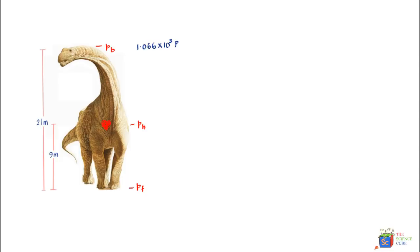The equation we'll use is that the pressure at the heart level equals the pressure at the brain level plus the pressure due to the blood column between the brain and the heart. This can be written as the density of blood times g times the distance h between the brain and the heart.